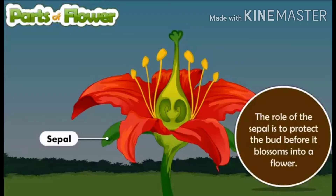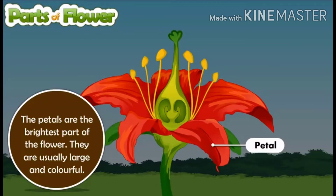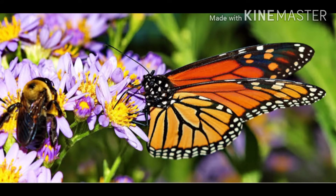Next are sepals. Flower buds are often covered by green leaf-like structures called sepals, which protect them in the bud stage. Then come the petals. Usually petals are the most prominent part of a flower structure. They are the most colorful and attractive part of a flower. Their main function is to attract pollinators like bees, insects and birds.